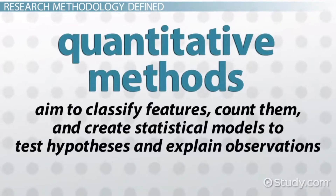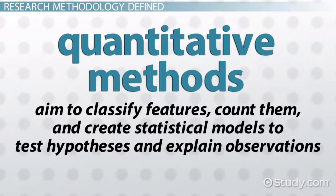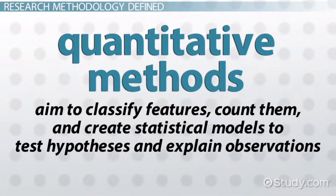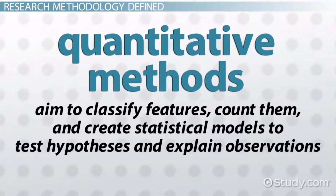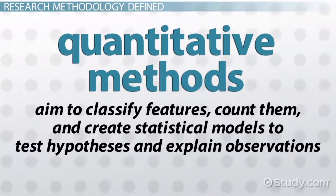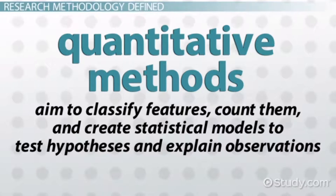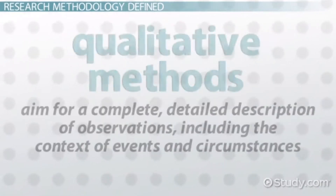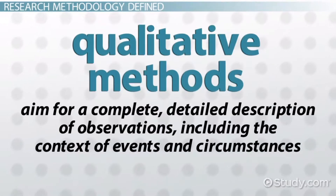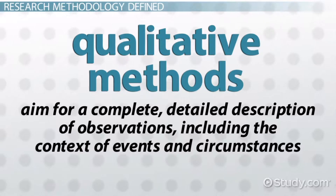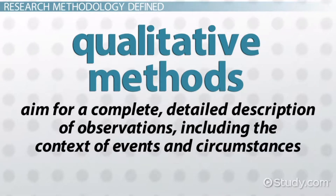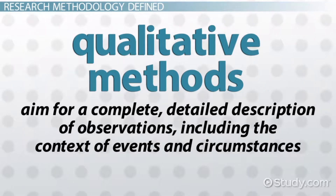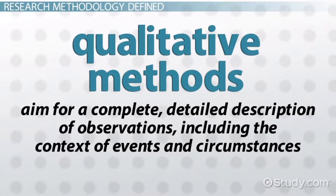Quantitative methods aim to classify features, count them, and create statistical models to test hypotheses and explanations. Qualitative methods aim for a complete, detailed description of observations, including the context of events and circumstances.